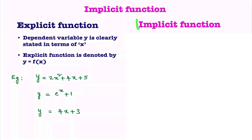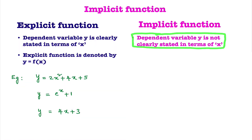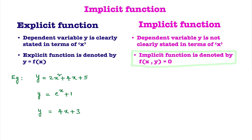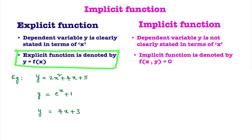Now we will see what is the definition of implicit function. In an implicit function, dependent variable y is not clearly stated in terms of x. Implicit function is denoted by f of x comma y equal to 0, whereas explicit function is denoted by y equal to f of x.